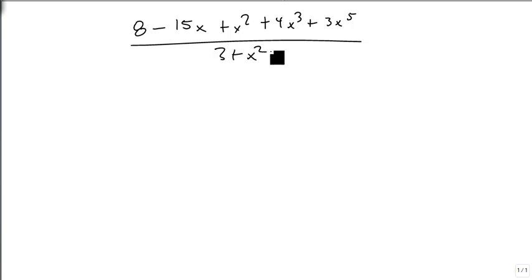The last problem that I want to look at has a couple of things going on with it. 8 minus 15x plus x squared plus 4x cubed plus 3x to the 5th divided by 3 plus x squared. And you're probably already screaming at me, hey, it's backwards. It's not in the right order.